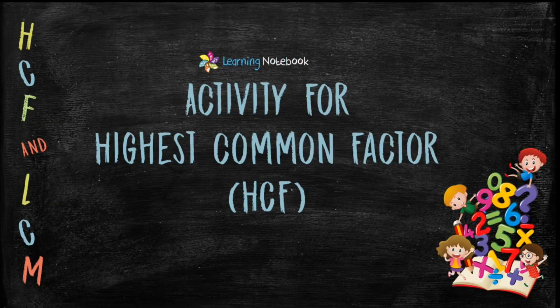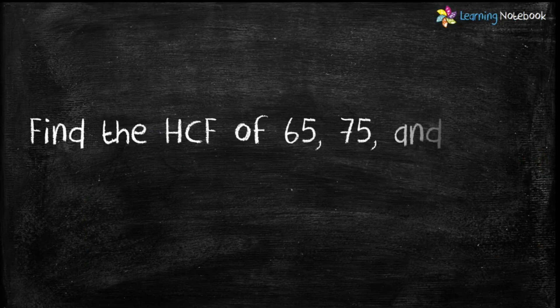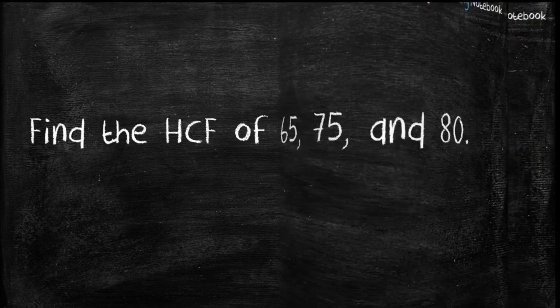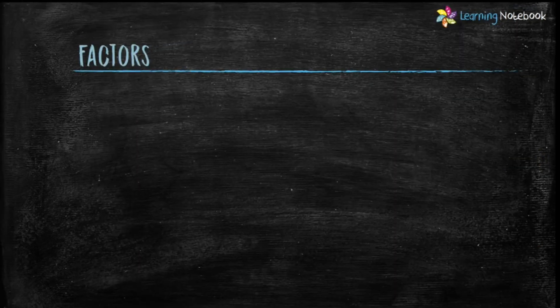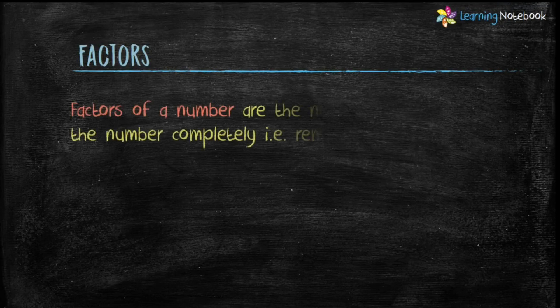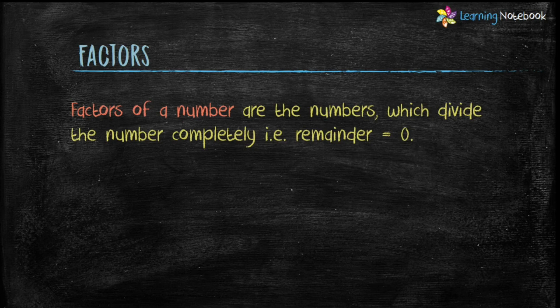Let's perform another interesting activity to find the Highest Common Factor or HCF of three given numbers. The question is to find the HCF of 65, 75, and 80. Before starting with the activity, let's first revise what are factors. Factors of a number are the numbers which divide the number completely, that is, the remainder comes out to be zero.